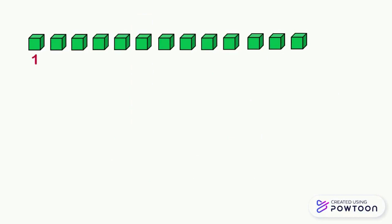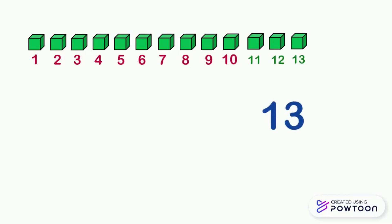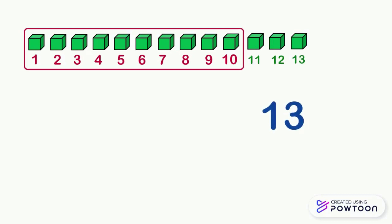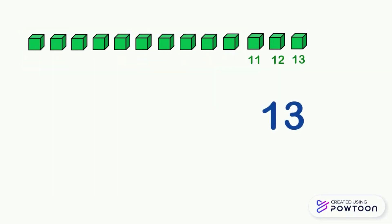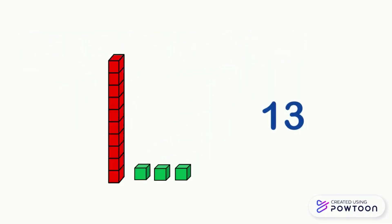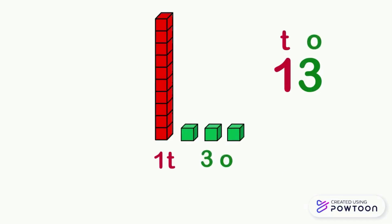Here there are some cubes: one, two, three, four, five, six, seven, eight, nine, ten, eleven, twelve, thirteen. There are thirteen cubes, so thirteen ones. Let's make a group of ten cubes and put them on top of each other. We notice that we have one ten and three ones. So in the number thirteen there are one ten and three ones: one ten equals ten, and three ones equals three — ten plus three equals thirteen.